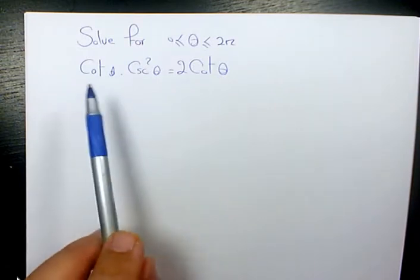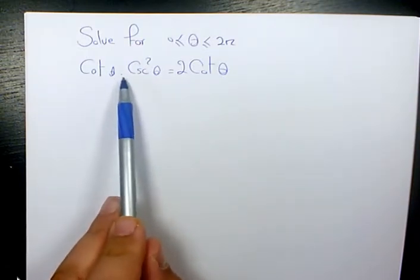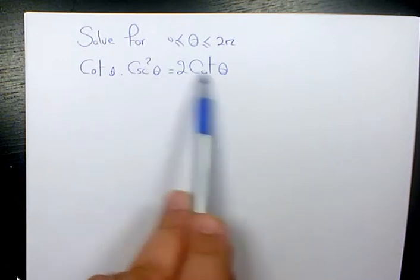to solve this trigonometric equation which is cotangent theta times cosecant squared theta equals 2 cotangent theta.